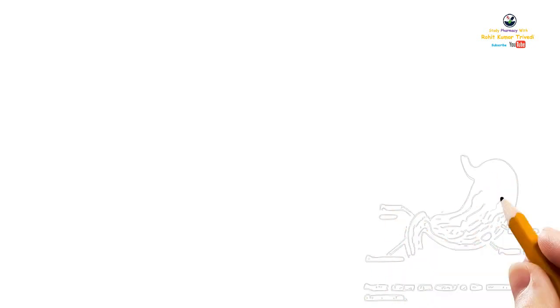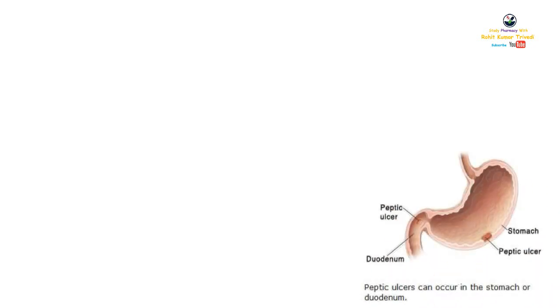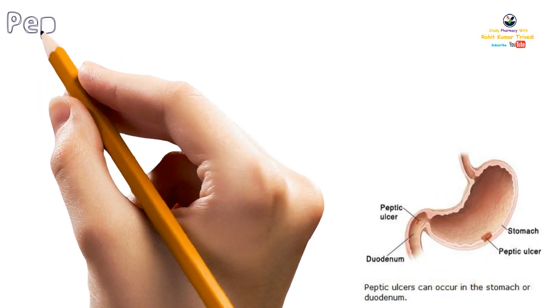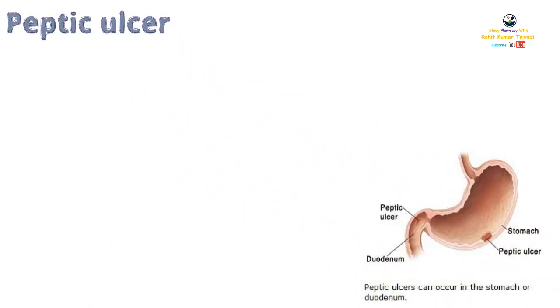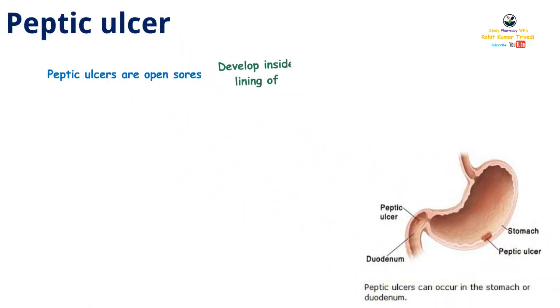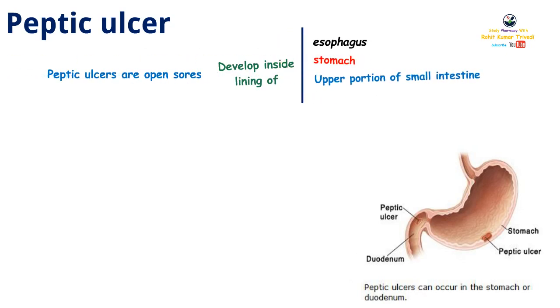Hello everyone, today we are going to discuss Peptic Ulcer. Peptic Ulcers are the open sores that develop inside the linings of the esophagus, stomach, and upper portion of the small intestine.